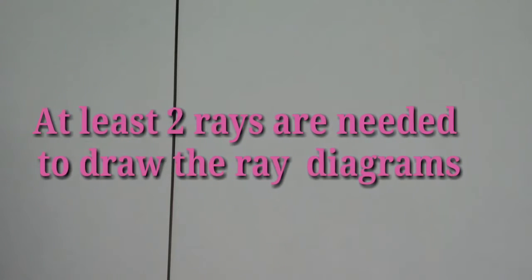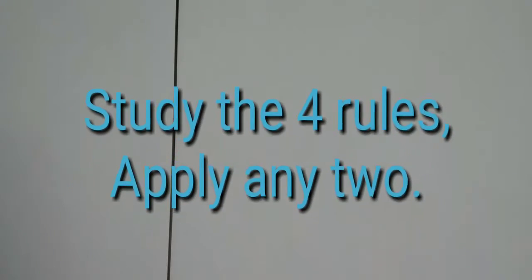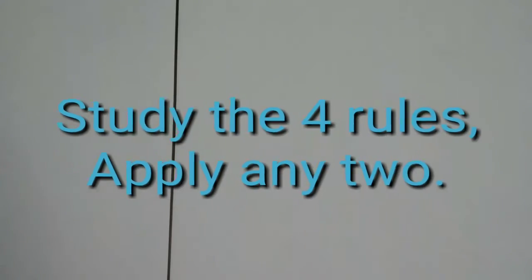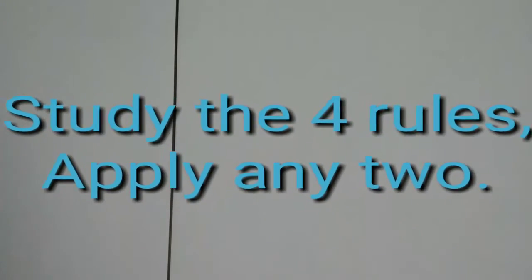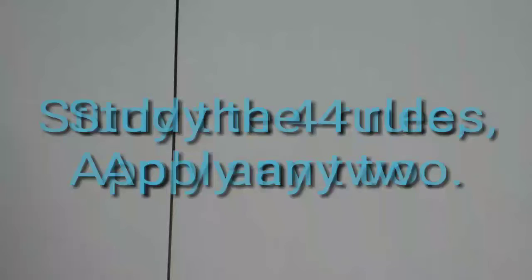Whenever we are drawing the ray diagrams, at least we need two rays to complete the diagram — minimum two rays are required. There are four rules in total, and from those four rules you can choose any two to draw the diagram. But you should study all four rules clearly.